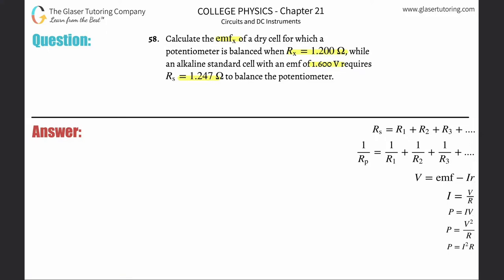All right, so basically I'm going to use a formula developed in number 57. So that was simply that v sub x over r sub x is equal to v sub s over r sub s. This comes from the equivalence of current because I'm just basically using Ohm's law here.